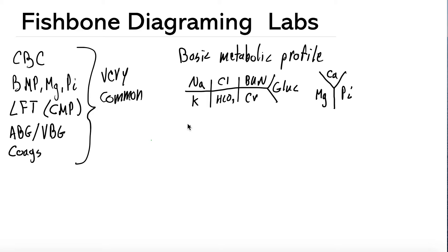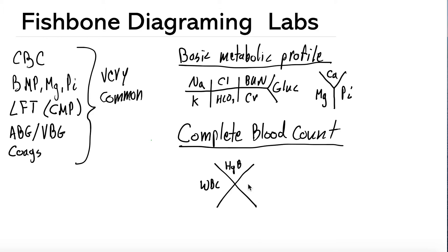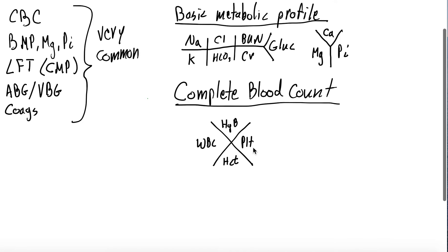Next one, complete blood count or CBC. This is another lab that is ordered quite frequently, often trended daily or even multiple times per day. The fishbone diagram for that looks as such: it's an X and you have the WBC count, the hemoglobin, the platelet count, and the hematocrit. So you have those four surroundings. This is another one that'll be written down.